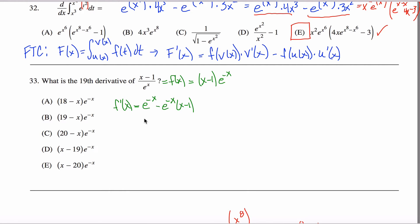And you could leave it like this but what you'll notice are all of these answers are something times e to the negative x power. So maybe I should factor out an e to the negative x power here. Well, then I would have a 1 here minus this x minus 1 here.